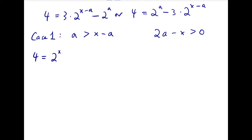Now the two equations become 4 equals 2 to the x minus a times 3 minus 2 to the 2a minus x, or 4 equals 2 to the x minus a, also this being the common factor, but the bracket term will be reversed, which is 2 to the 2a minus x minus 3.